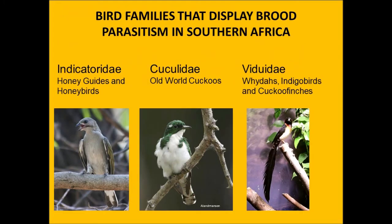What are the three families that have brood parasites in southern Africa? The families are Indicatoridae — the honeyguides and honeybirds — Cuculidae — the Old World cuckoos — and Viduidae — the whydahs, indigobirds, and cuckoo finches. Note that in the family Cuculidae, coucals are sometimes placed in this family, but they are now in a different family called Centropidae. Coucals are not parasitic.